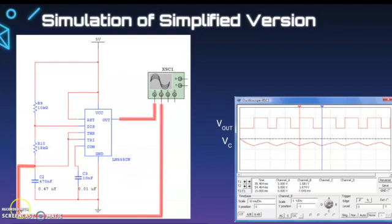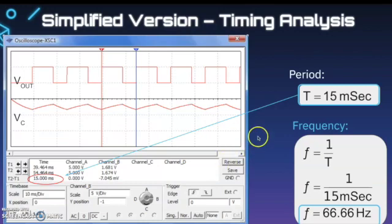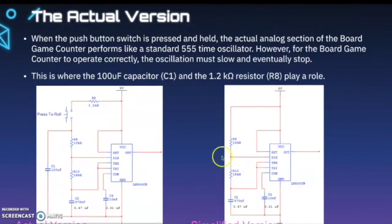The other channel is the VC, creating that fluctuation. Looking at the timing of the simplified version again, we have a period of 15 milliseconds and that frequency is 66.66 hertz. Right here is where we get that period from on this oscilloscope.